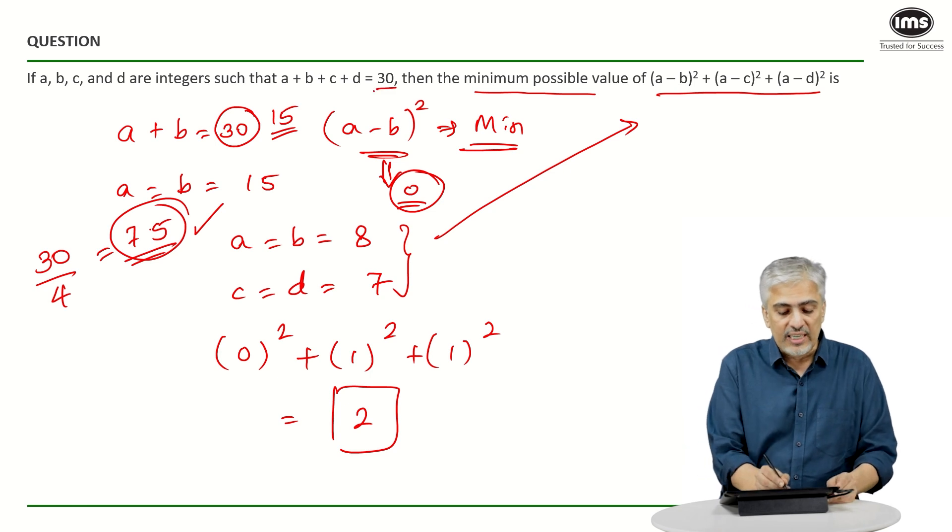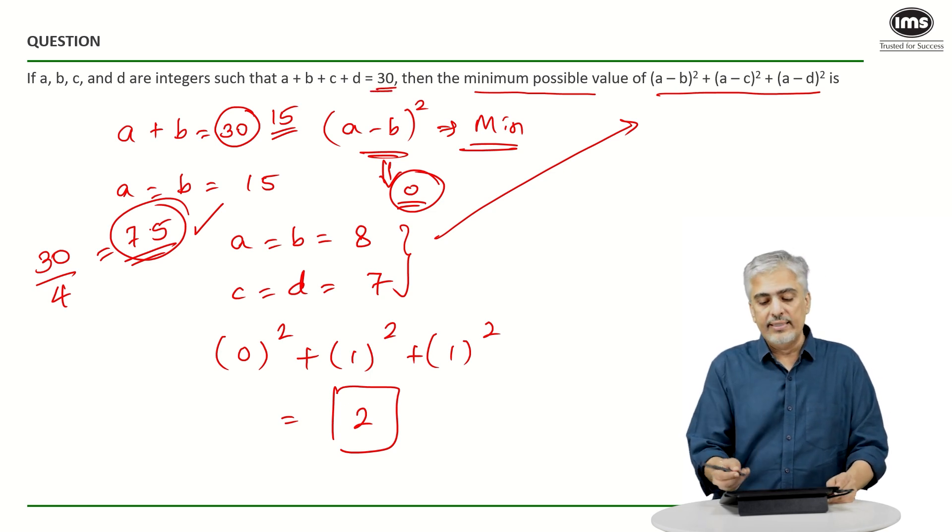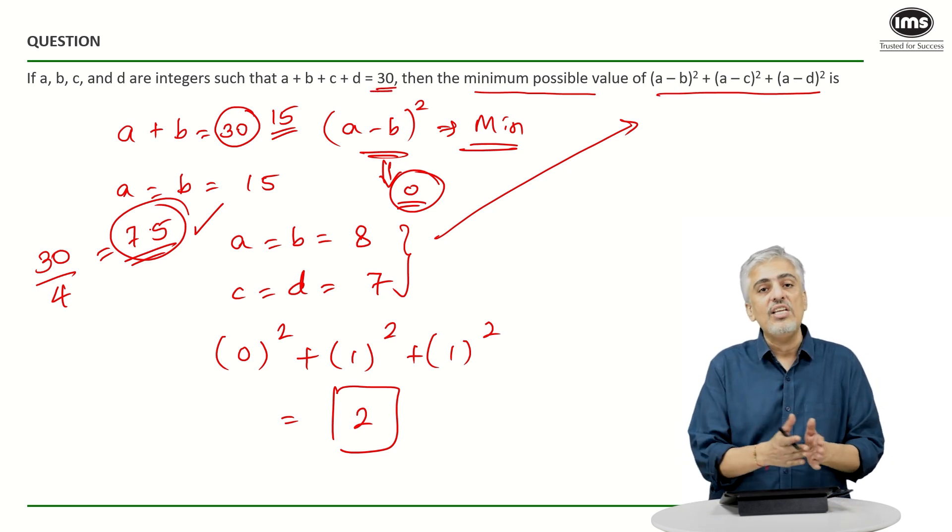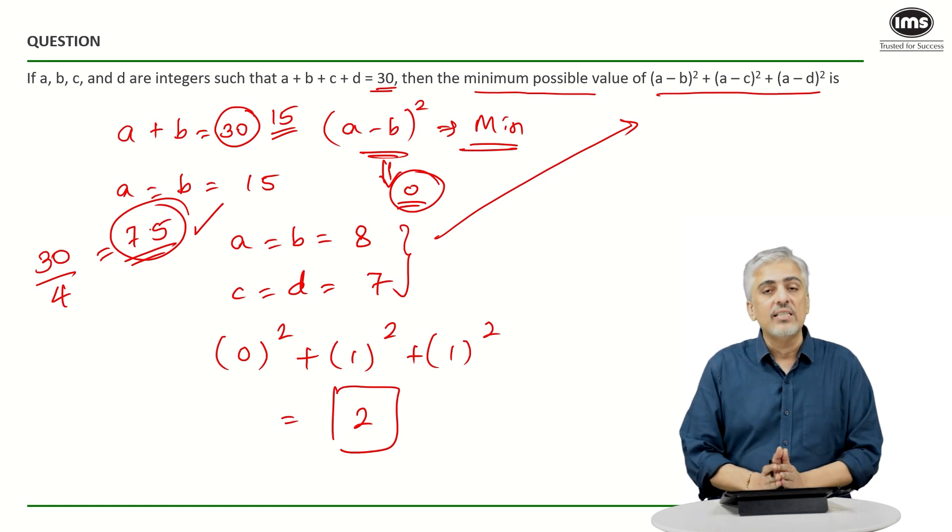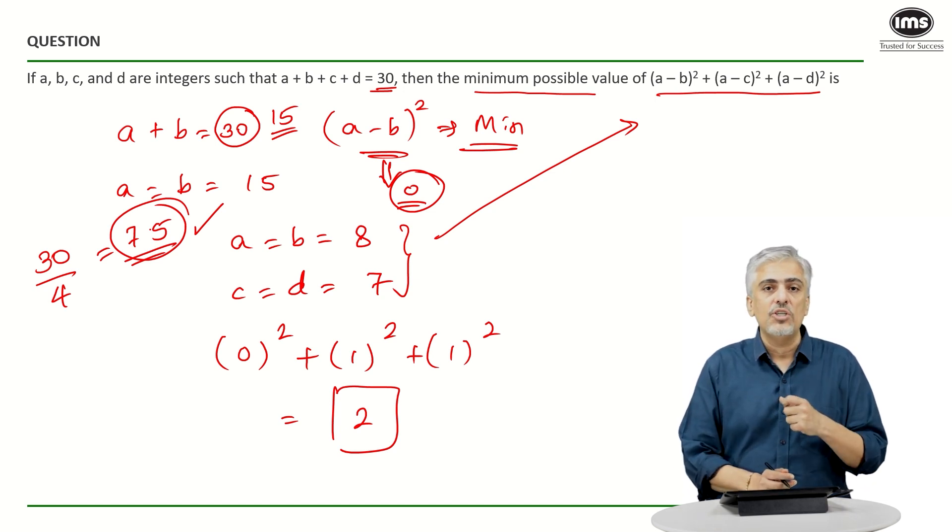Well, instead of 30, if we had this as 32, then the answer would have come zero because we could have taken each of them as 8, 8, 8, 8 and the answer would have been zero. But either ways, always try to take a smaller expression for a similar thing and just try it. It always makes life that much easier.